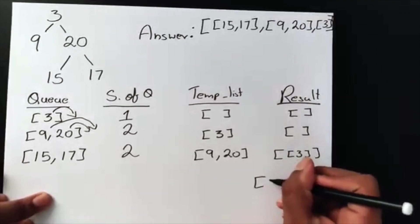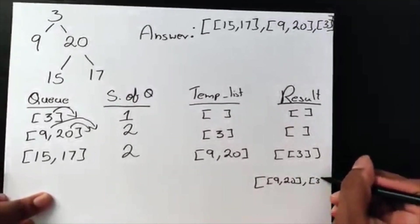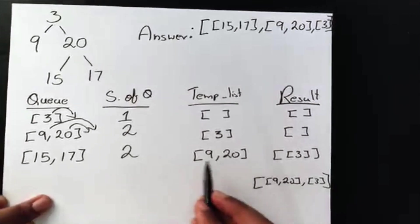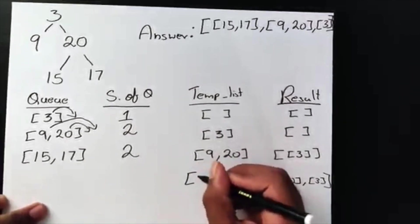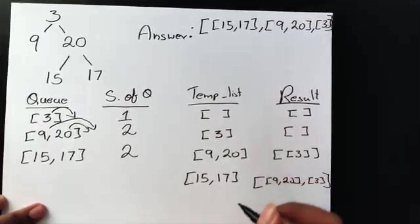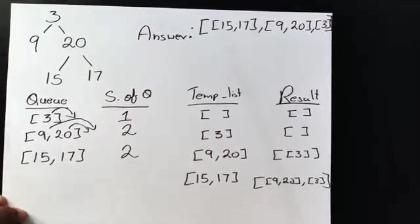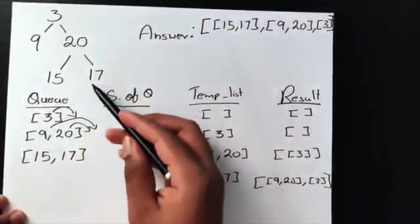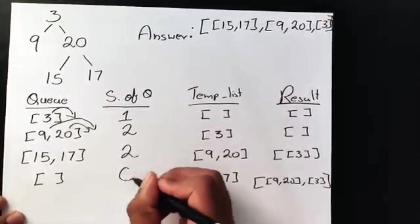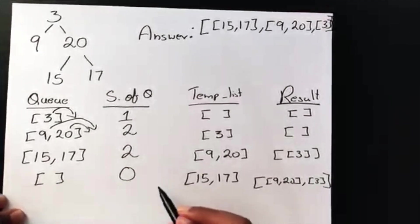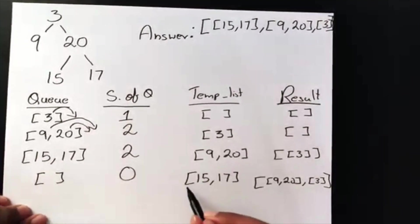So we're going to insert [9, 20] at index 0, i.e., at the beginning of the list. So our result now looks like: [9, 20] and then [3]. Our temporary list empties out and 15 and 17 come into the temporary list. After dequeuing them, the queue becomes empty because 15 and 17 have no children.